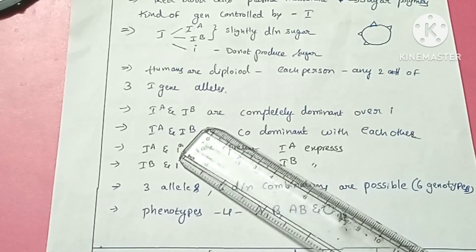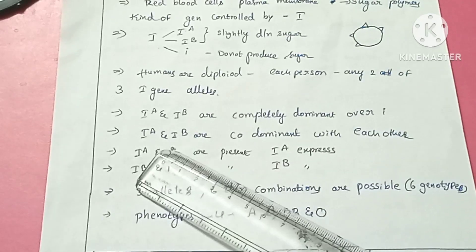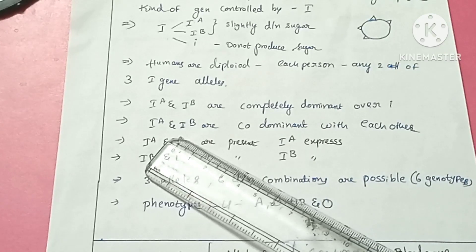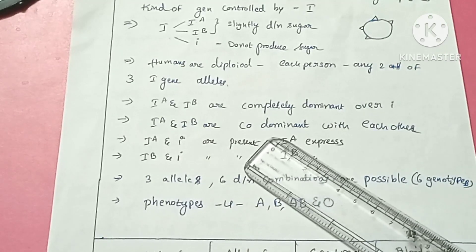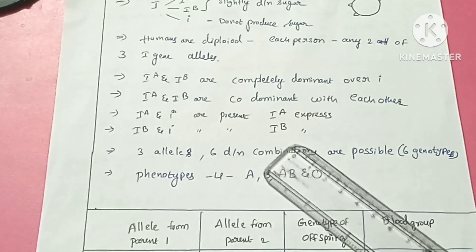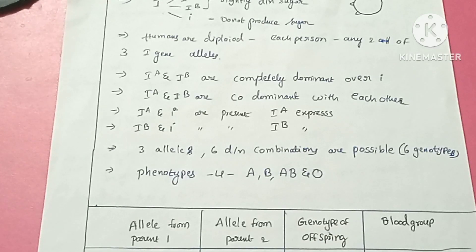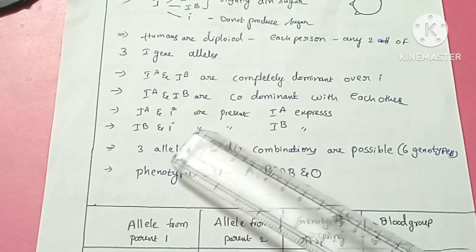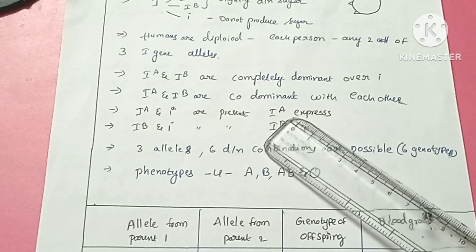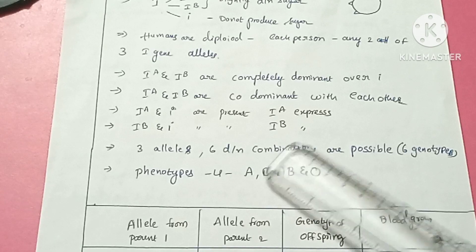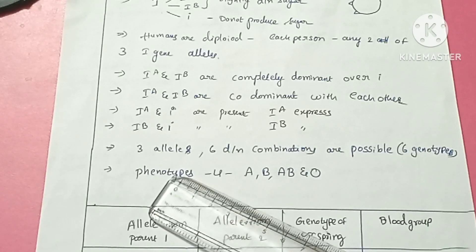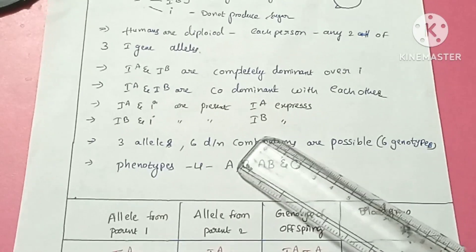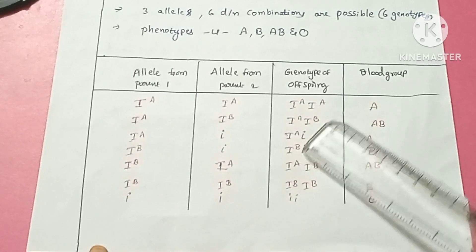IA and IB are both completely dominant over small i. So in any combination with small i, either IA or IB will dominate and express. There are three alleles in total, and the different combinations give us six different genotypes.